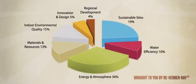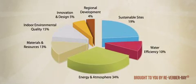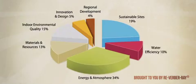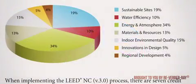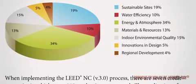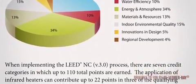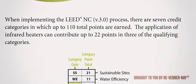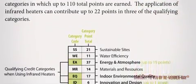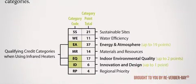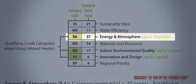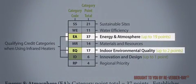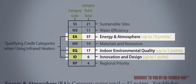The evaluation process for determining what level of certification each building is given is based on seven credit categories in which up to 110 total points are earned. The application of infrared heaters can contribute up to 22 points in three of the qualifying categories.